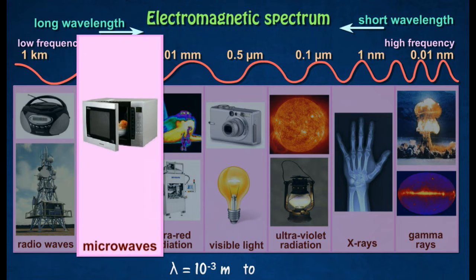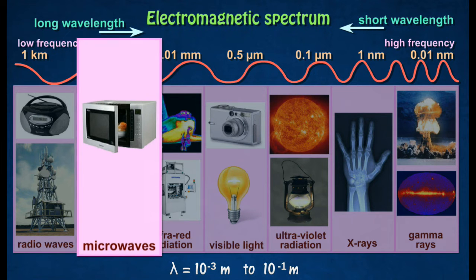Microwaves in the electromagnetic spectrum are used in radar systems, telecommunication via satellites, cellular phone service, and microwave ovens for cooking.